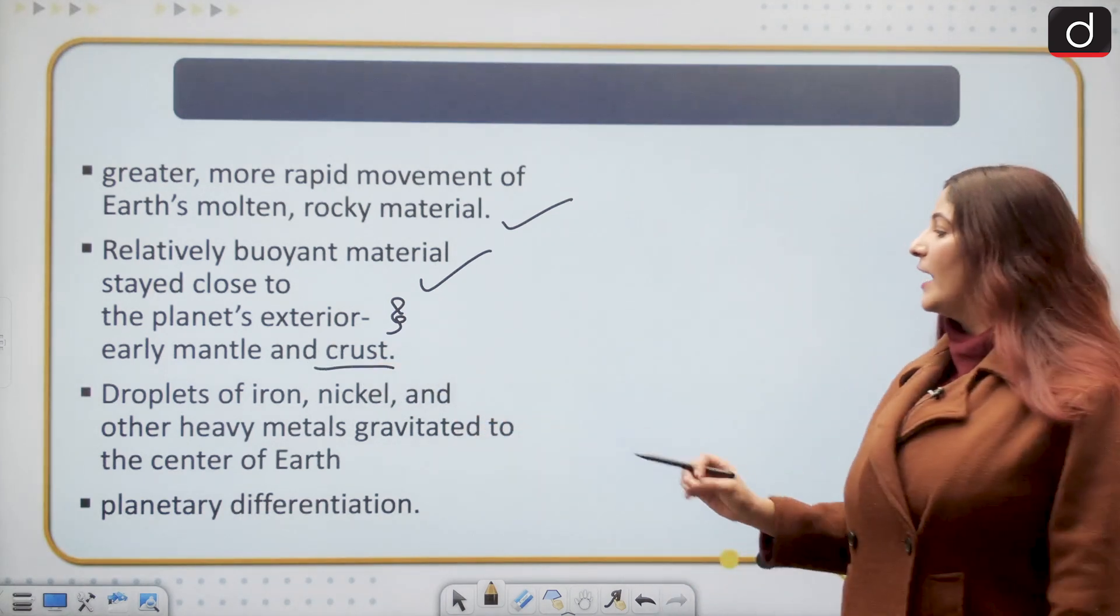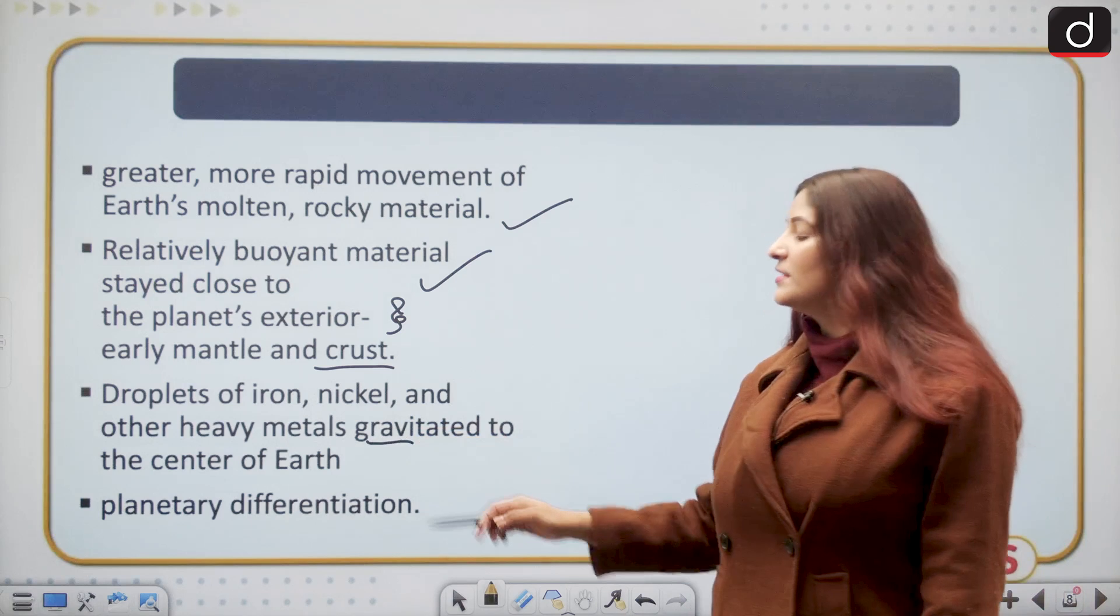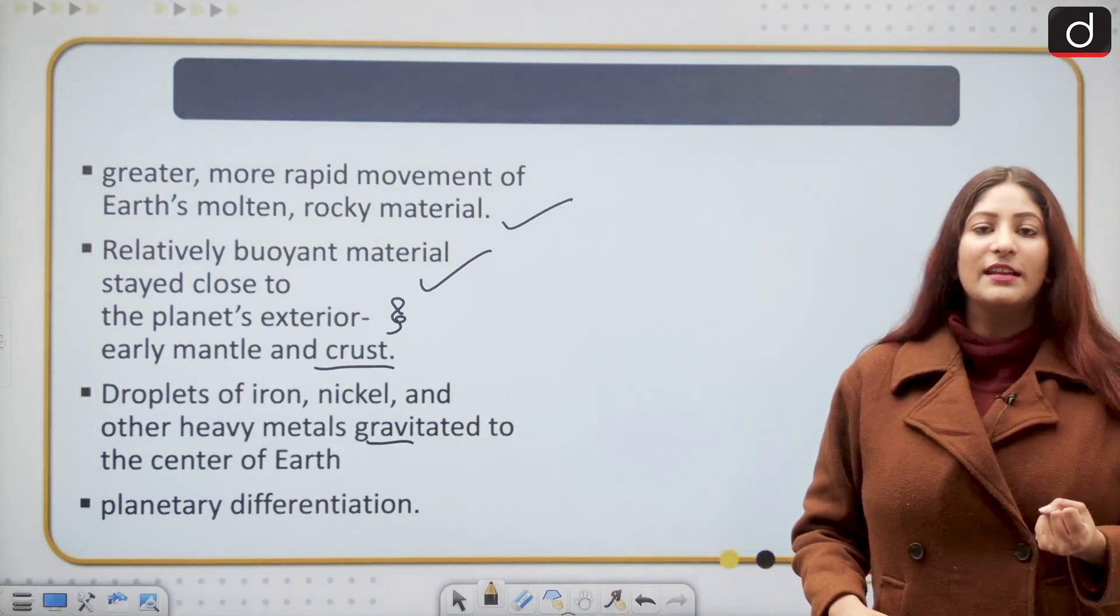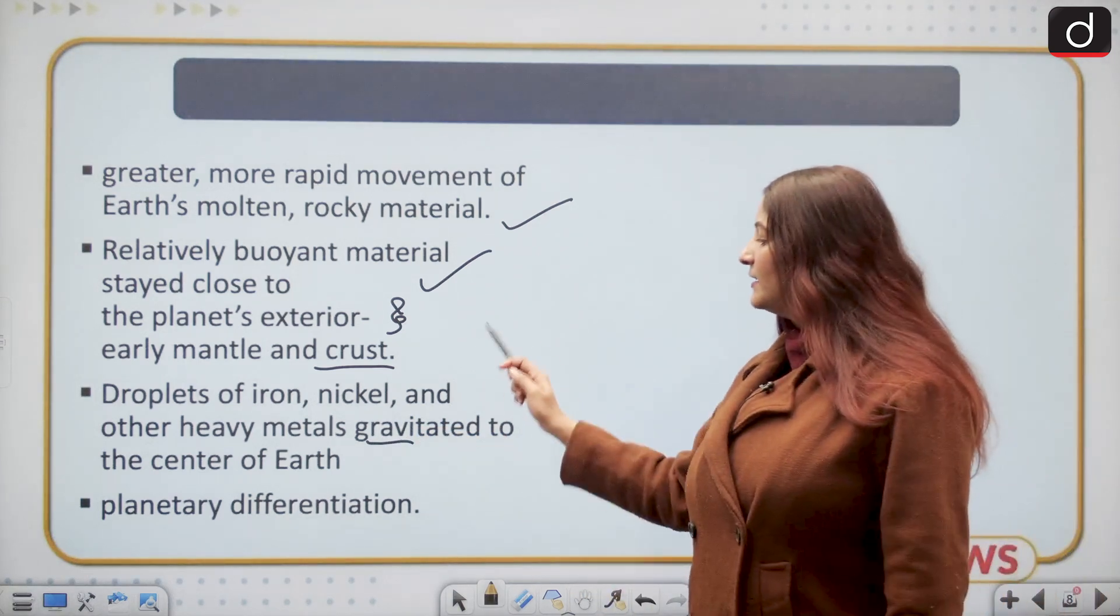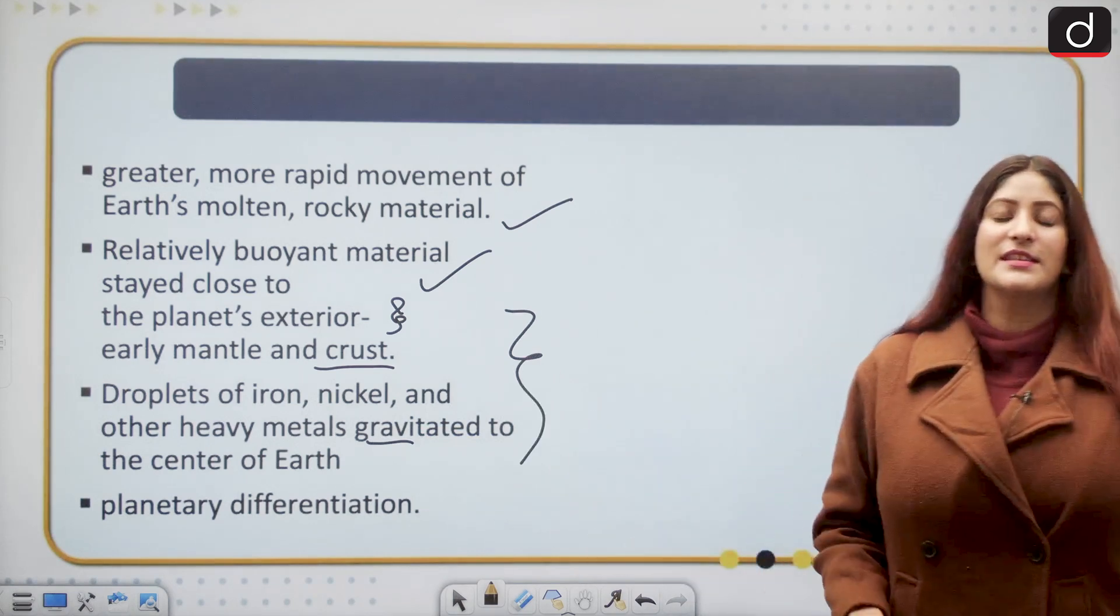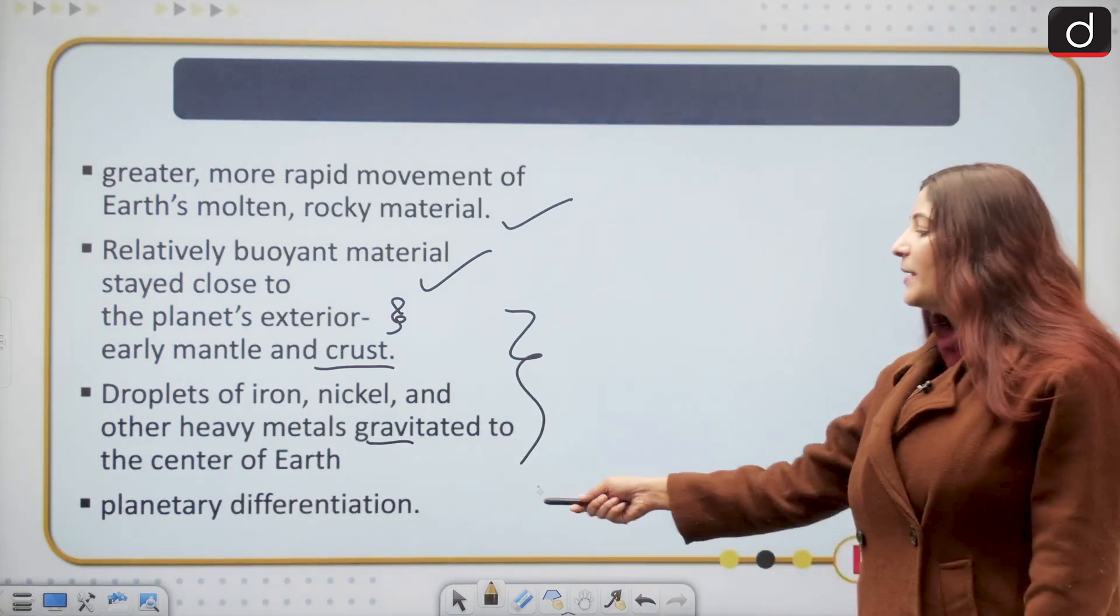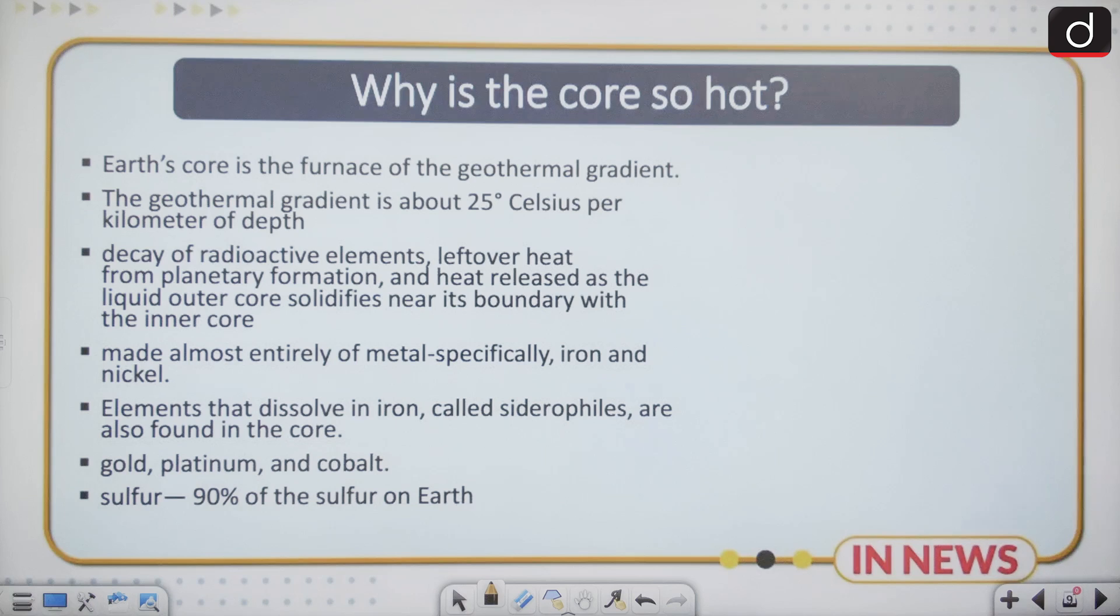But there were droplets of iron, nickel, and other heavy materials that started gravitating toward the middle, and this differentiation of different elements layer wise is known as planetary differentiation. This can be asked in your examination.